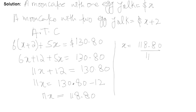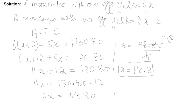So x equals 118.80 divided by 11. Dividing: 11 times 10 is 110, then 8.80 remains — 11 times 8 is 88 — so x equals 10.8 dollars. That's what we got.